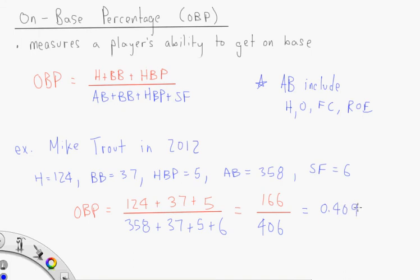So we can say that in 2012, Mike Trout has a 409 on base percentage.